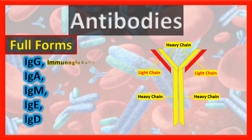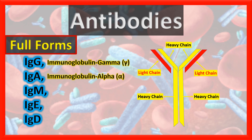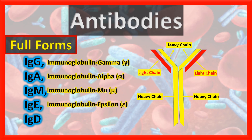If the type of heavy chain is gamma, it is immunoglobulin gamma — 'immuno' for immunity, 'globulin' for the globular structure of the antibody protein. If the heavy chain is alpha, it is immunoglobulin alpha. If the heavy chain is mu, it is immunoglobulin mu. If the heavy chain is epsilon, it is immunoglobulin epsilon, and if it is delta, it is immunoglobulin delta.